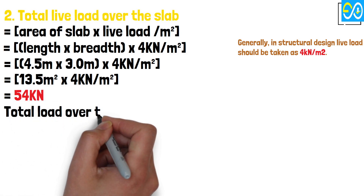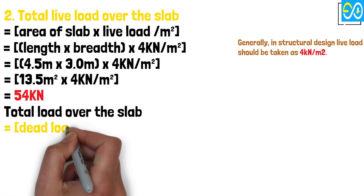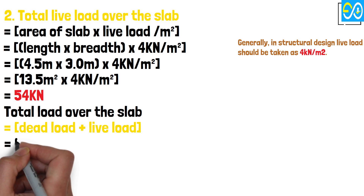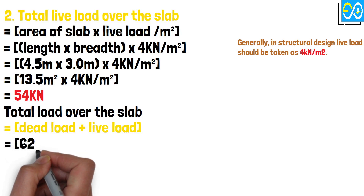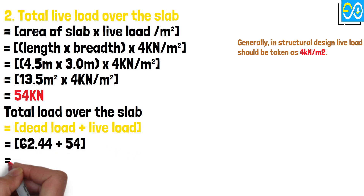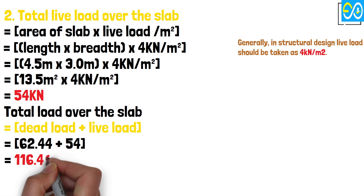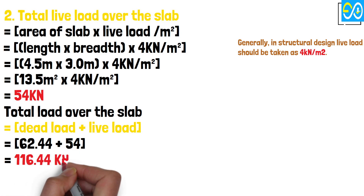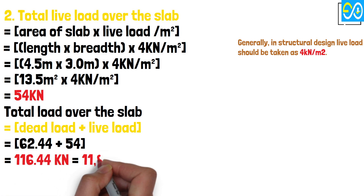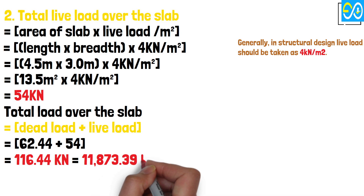Total load over the slab equals dead load plus live load equals 62.44 plus 54, equals 116.44 kN, equals 11,873.39 kg.